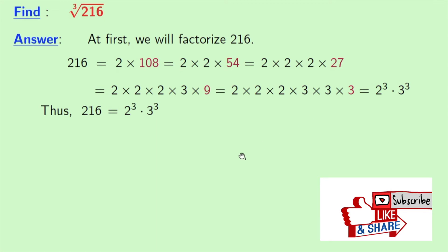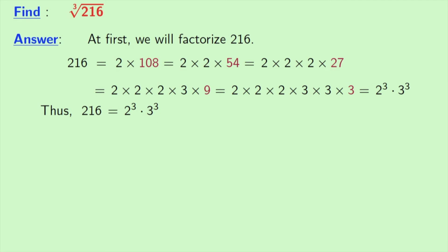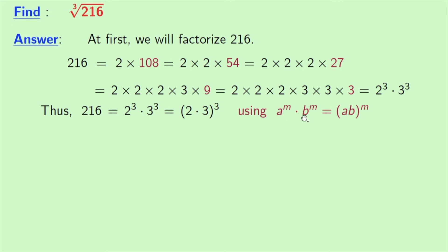Thus, we get 216 is equal to 2 cube times 3 cube, which again can be written as 2 times 3 whole power 3, using the rule a power m times b power m is equal to ab whole power m, where a is 2, b is 3 and m is 3. By simplifying we get 6 power 3.